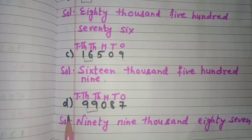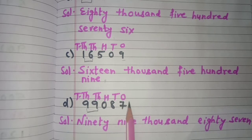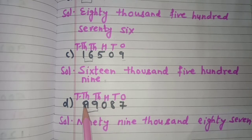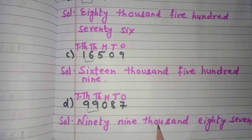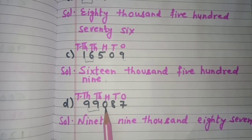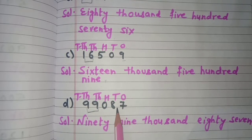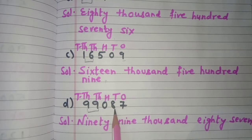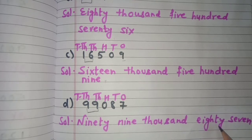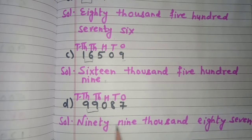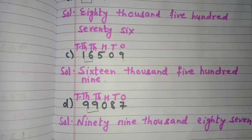Next is part d: 99,087. Mention the places — ones, tens, hundreds, thousands, ten thousands. Now the two 9s come under the thousands period, so we will say 99,000. At hundreds we have 0, so we will not write anything. At tens and ones place we have 87, so we read it together: 87. The number name is ninety-nine thousand and eighty-seven.